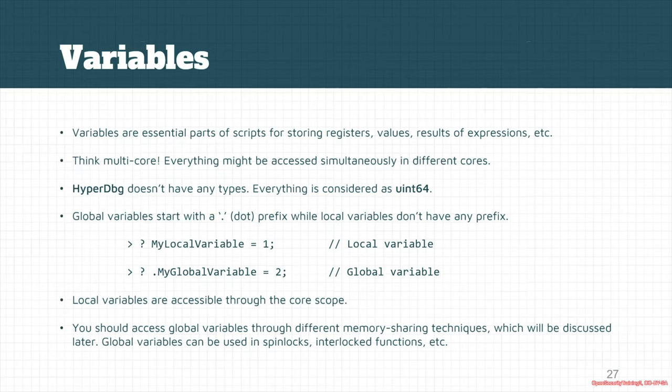Everything is considered as a uint64 or 64-bit integer value. Global variables start with a dot prefix before the name of the value. If you don't specify any prefix before the name, it's considered a local variable.